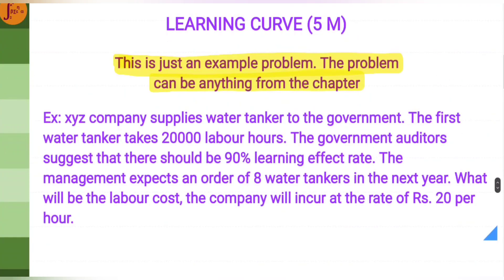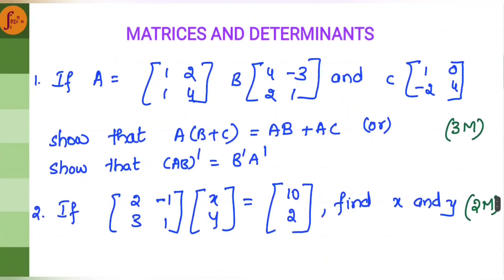The next chapter is learning curve. You will have to apply the learning effect and come up with the final cost. This is an easy five marker.